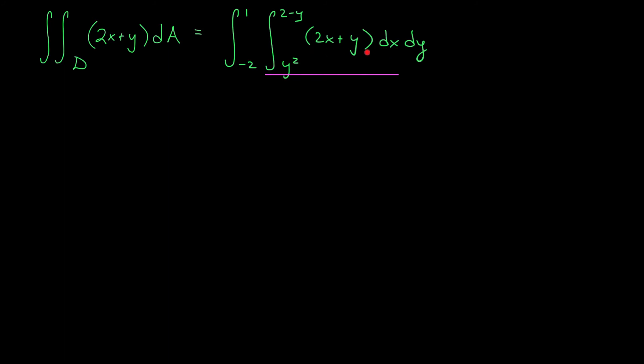We start by looking for an antiderivative of this expression with respect to x. Since we treat y like a constant, we can use the antiderivative x squared plus xy. And we evaluate this from x equals y squared to x equals 2 minus y.